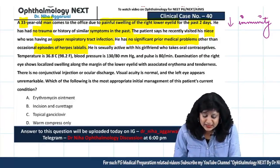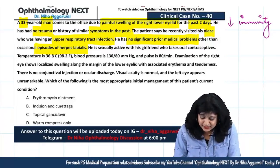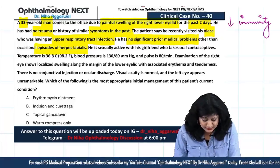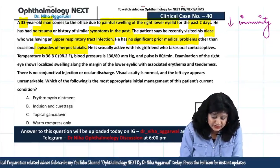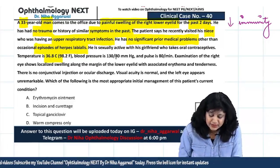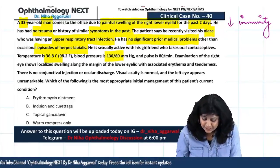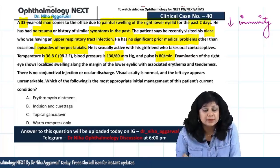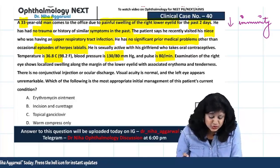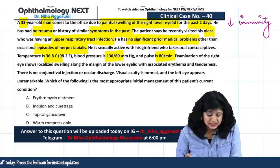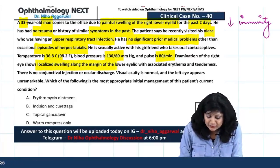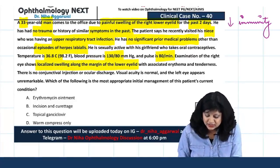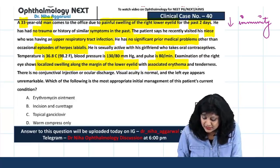He is sexually active with his girlfriend who takes oral contraceptives. Temperature is 36.8, BP is 130/80, pulse is 80 per minute. Examination of the right eye shows localized swelling along the margin of the lower eyelid with associated erythema and tenderness.